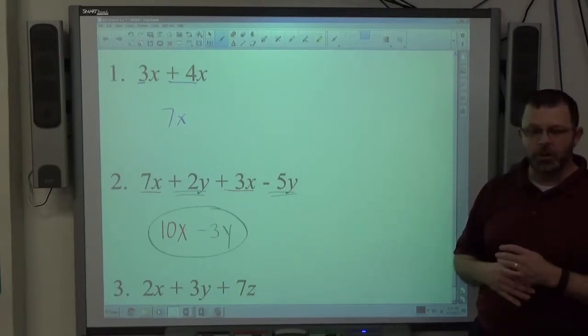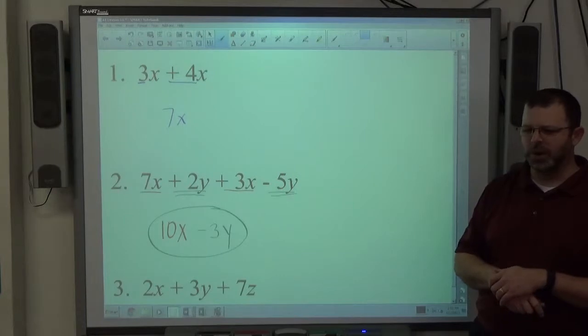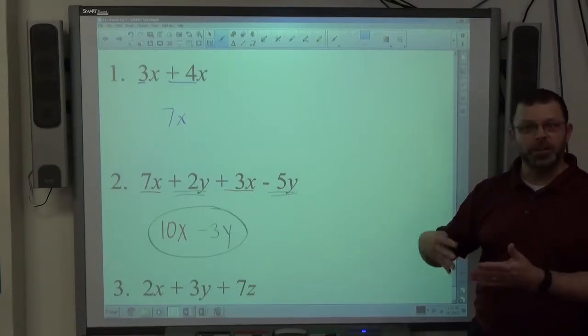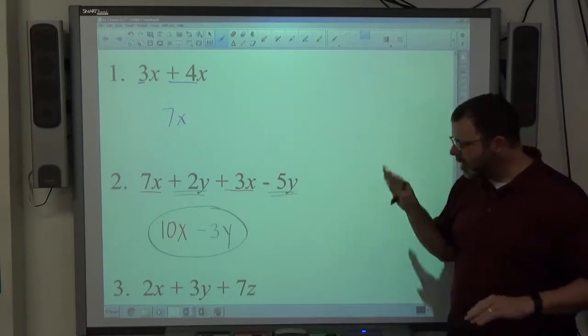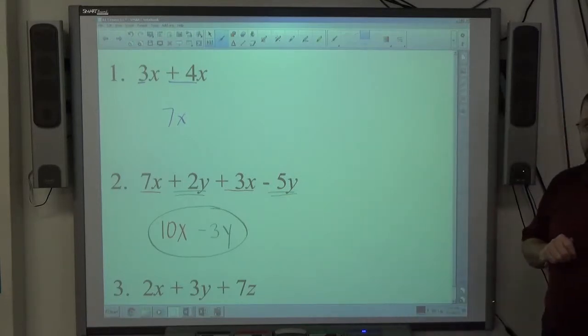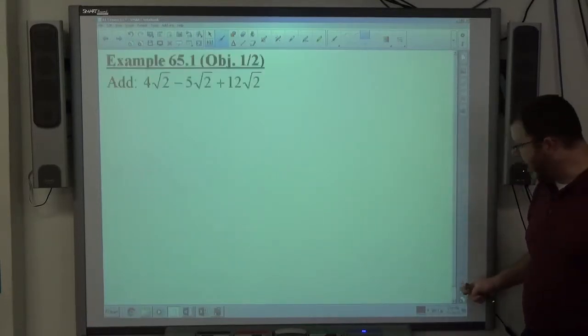So adding like terms is a skill we learned probably lesson 25 to 30 somewhere in there. It's been a while since we've seen it. We've been using it pretty frequently. The same type of technique is used to add radicals.